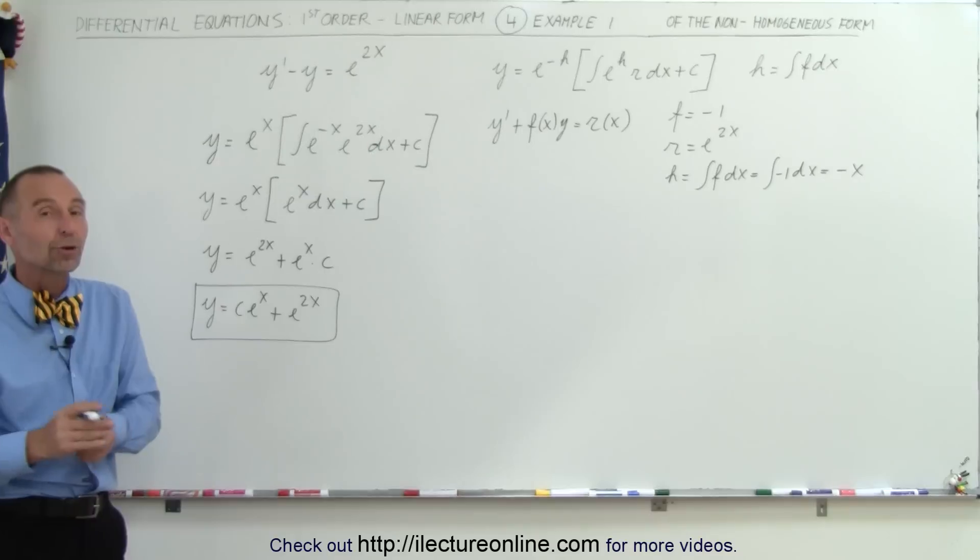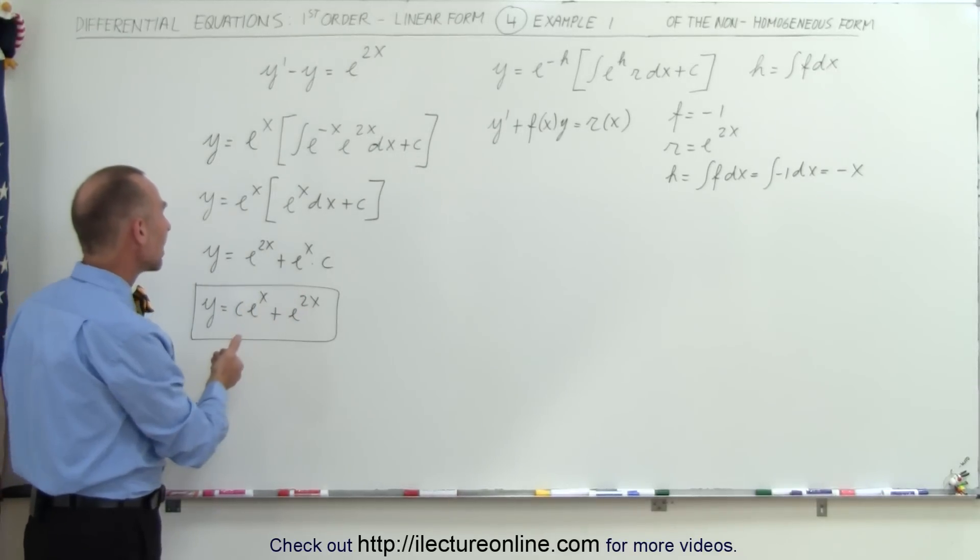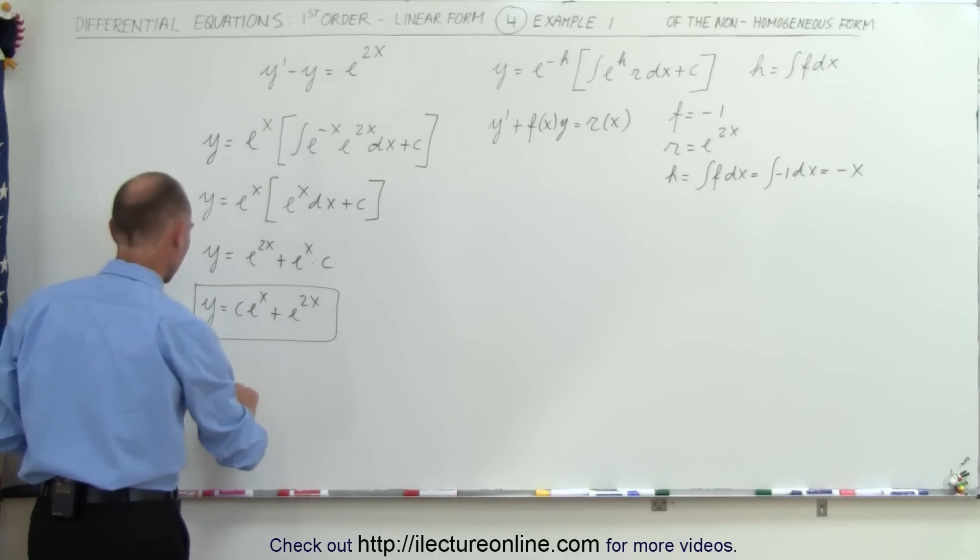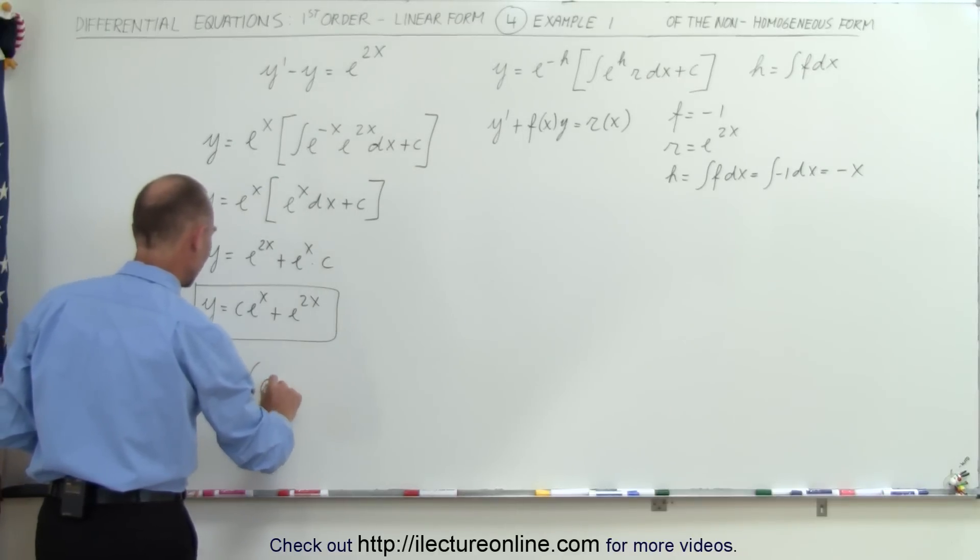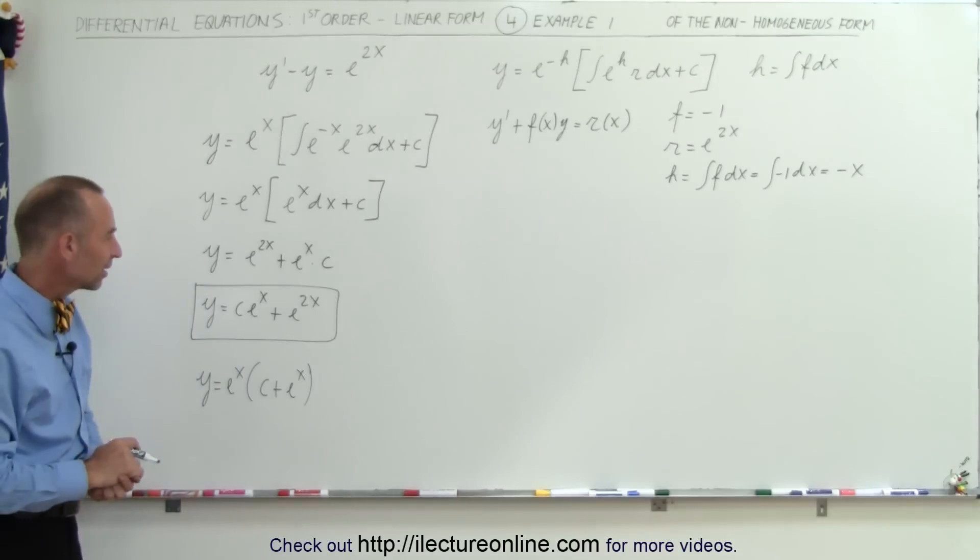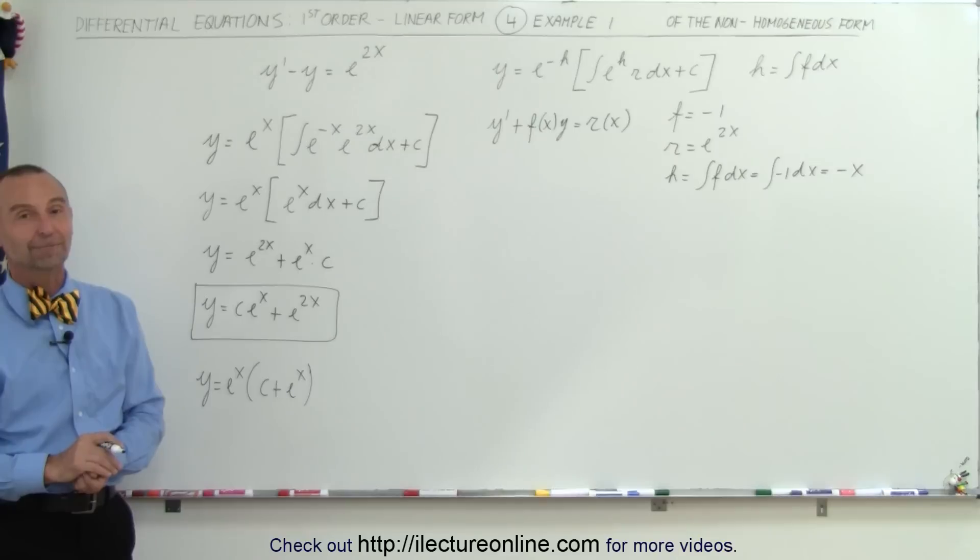That's a few different forms that you could write it in. You could, of course, factor out an e to the x, but we don't really need to do that, so we could say y is equal to e to the x times c plus e to the x. If you like that form better, but it doesn't matter, either one will be just fine to represent itself as the solution to this differential equation. And that's how we do that.